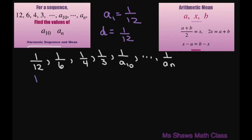So 1 divided by a sub n, and we're going to use our formula that a sub n, let me write it down, a sub n equals your first term plus n minus 1 times d. So basically 1 divided by a sub n equals first term 1 divided by 12 plus n minus 1 times d, 1 divided by 12.